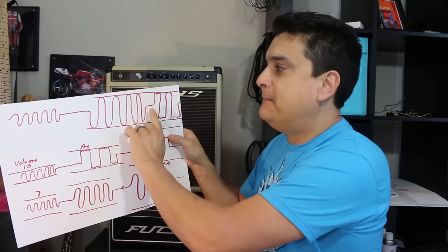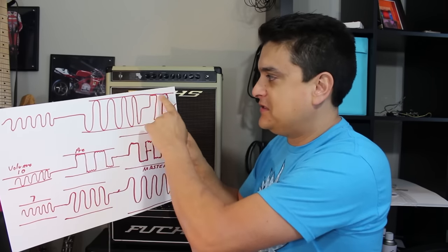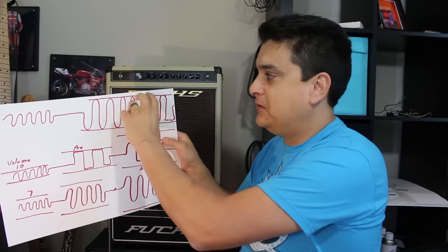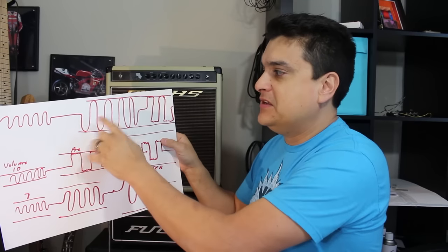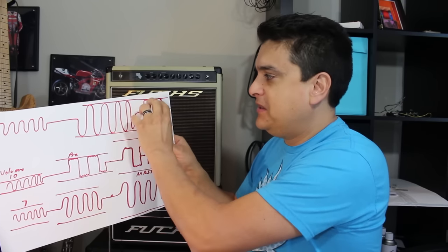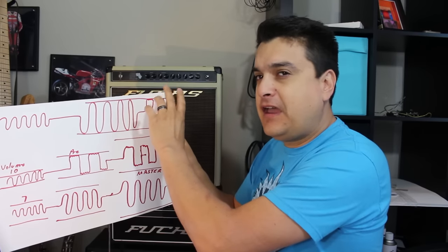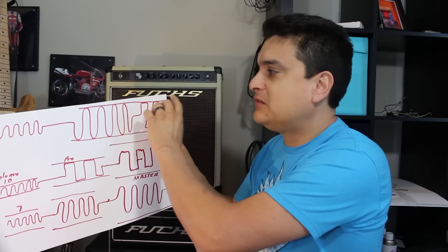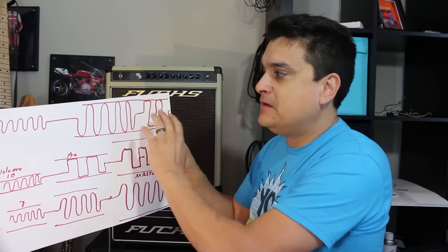When we adjust it above this threshold, it starts to kind of clip the tops off of the signal. It starts to compress that a little bit. The thing is, the voltages and everything still change, but they can only fit effectively, cleanly, through a certain size hole, if that makes sense. And then it starts to kind of mess it up.